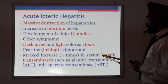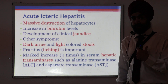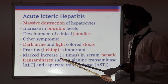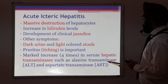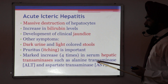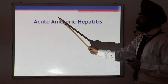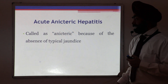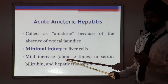In acute icteric hepatitis, there is a marked increase in serum hepatic transaminases — when liver injury occurs, enzymes leak into the blood. The rise is approximately four times normal. Examples are alanine transaminase (ALT) and aspartate transaminase (AST). In the milder anicteric form, jaundice is absent or minimal, with a lesser rise in bilirubin and transaminases — approximately two times normal.